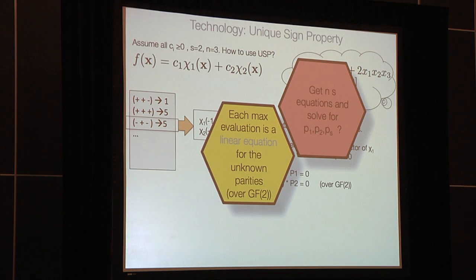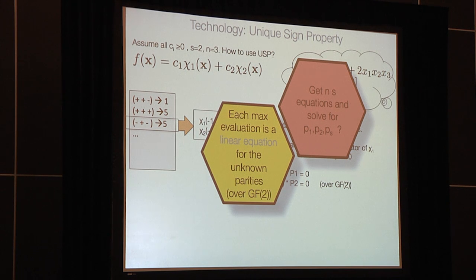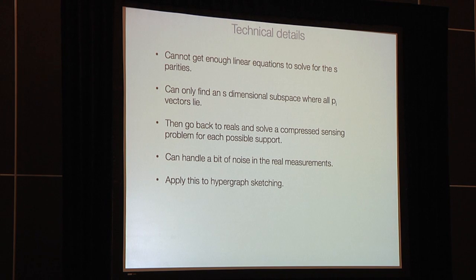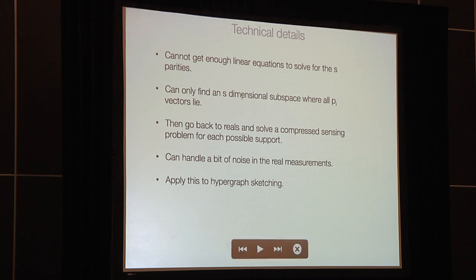The first idea is to collect enough linear equations over GF2 — if we can get n times s linearly independent equations, we solve with Gaussian elimination and we're done. However, we cannot always get enough linear equations. What we can do is confine the subspace where the vectors lie to an s-dimensional subspace, then go back to compressed sensing and solve the problem in that reduced space. With a bit more work, we can also handle a small amount of noise.